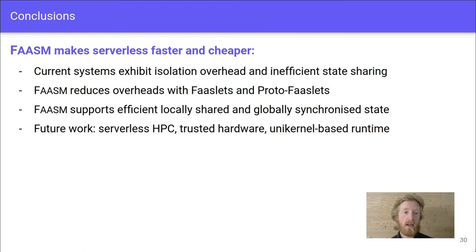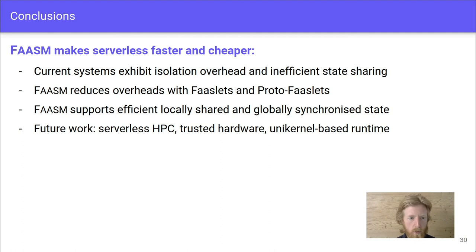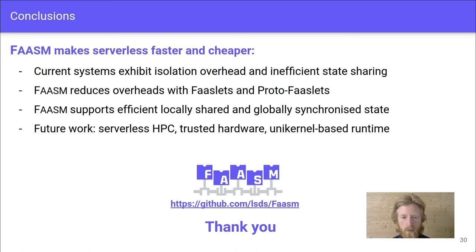In summary, FASM makes serverless faster and cheaper. Current container-based platforms show two main problems: excessive isolation overheads and inefficient state sharing. FASM reduces these overheads with FASlets and proto-FASlets, and supports efficient locally shared and globally synchronized state to address inefficient state sharing. FASM is publicly available and open source on GitHub. Thank you for listening.